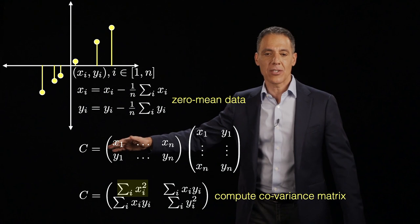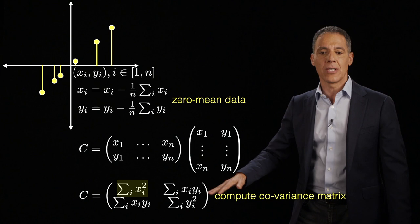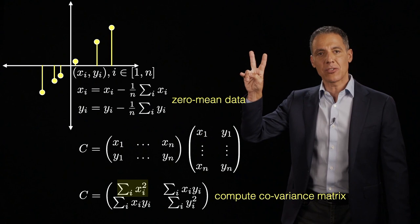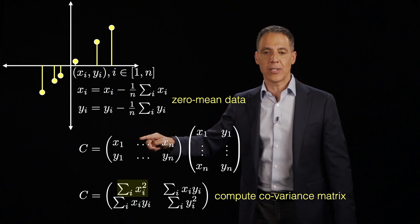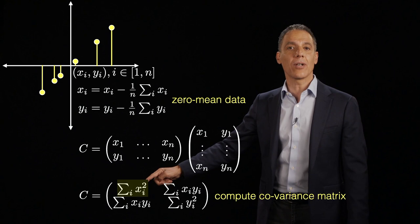And the way we compute the covariance matrix is I'm going to make a two by N matrix with my X and Y coordinates in the rows that have been zero meaned. So let's call this my data matrix. This is the transpose of my data matrix where now the data are in the columns. I'm going to multiply this two by N by this N by two matrix. And that's going to give me a two by two covariance matrix.